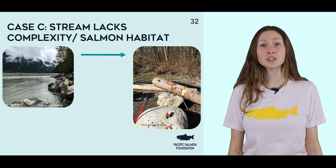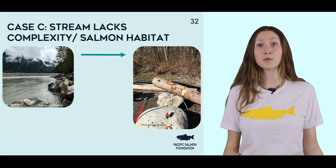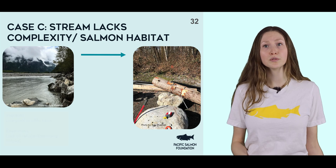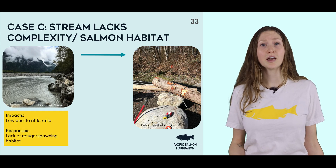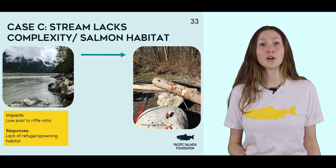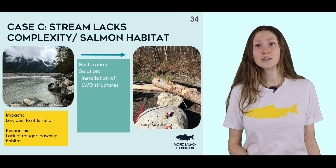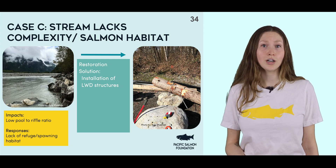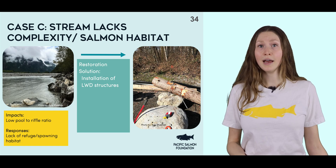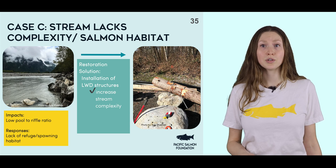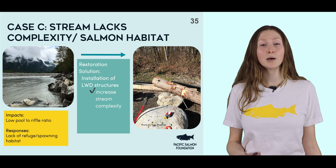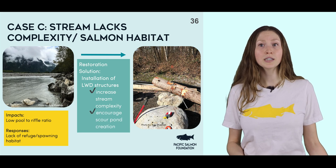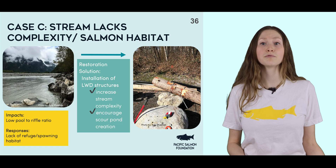Sometimes stream banks are intentionally straightened or debris like LWD is removed. But salmon love complex habitat and need a good ratio of pools to riffles, plus habitat for spawning and resting — features that are lost when streams are straightened. As restoration ecologists, we can add complexity back into the stream with LWD structures. These structures are made up of large boulders and/or large wood placed back into streams to encourage changes in sediment transport, which helps add back complexity. When the stream has to flow around these structures, it will naturally create scour pools that become excellent refuge areas for salmon.